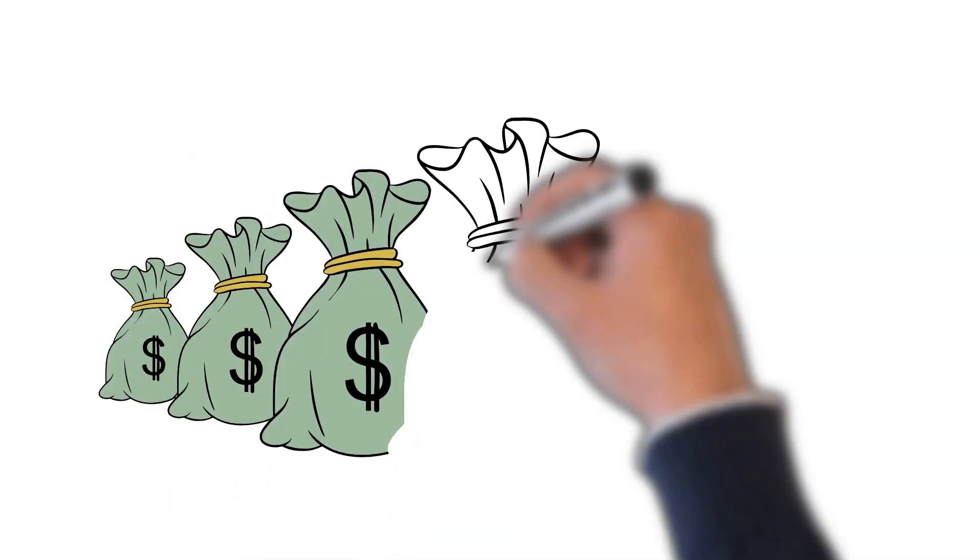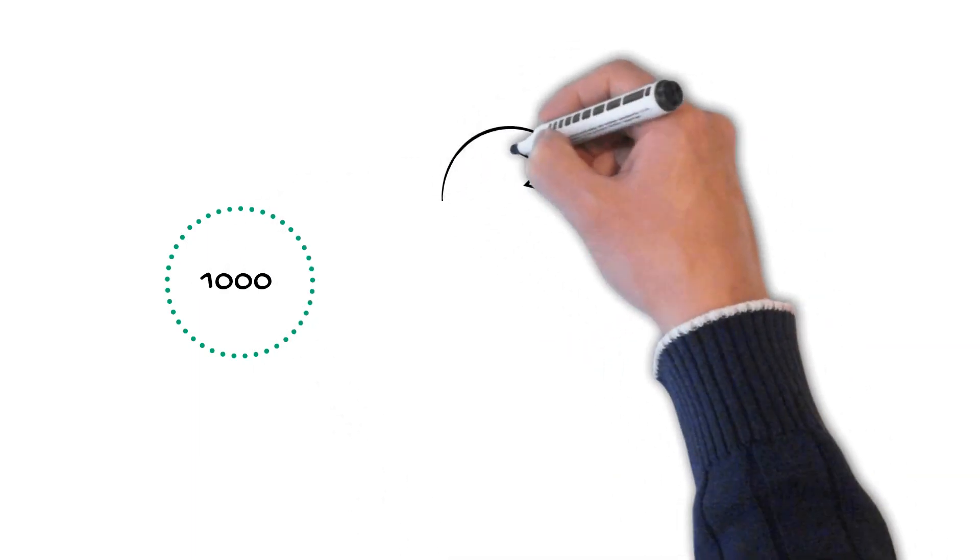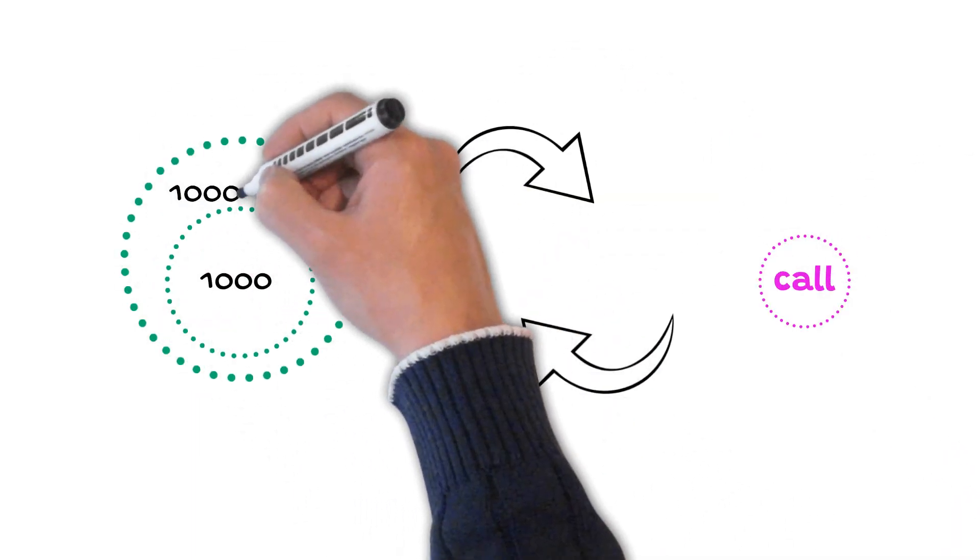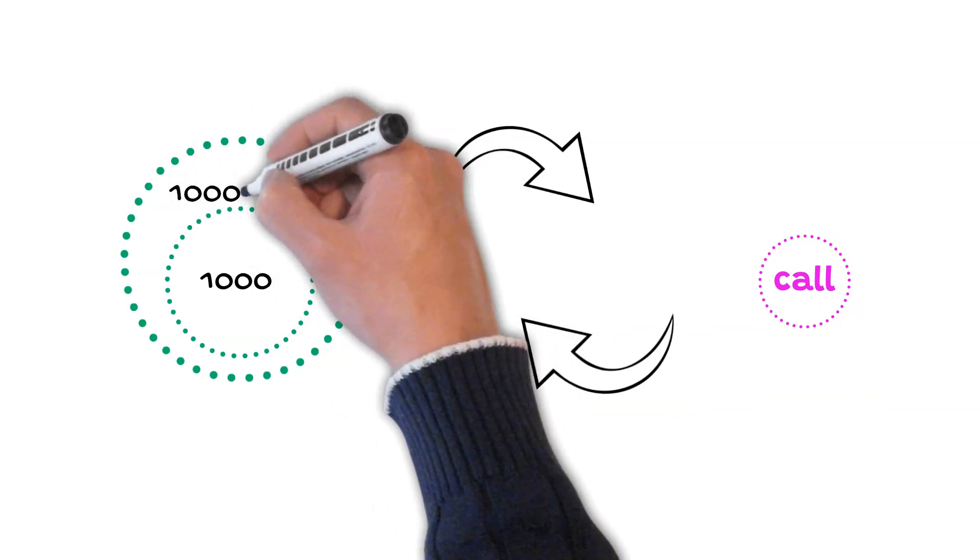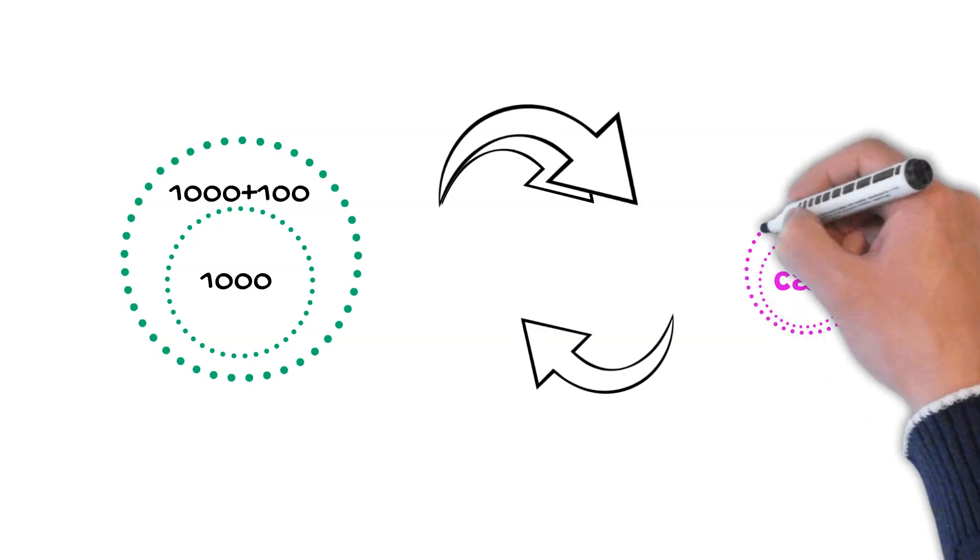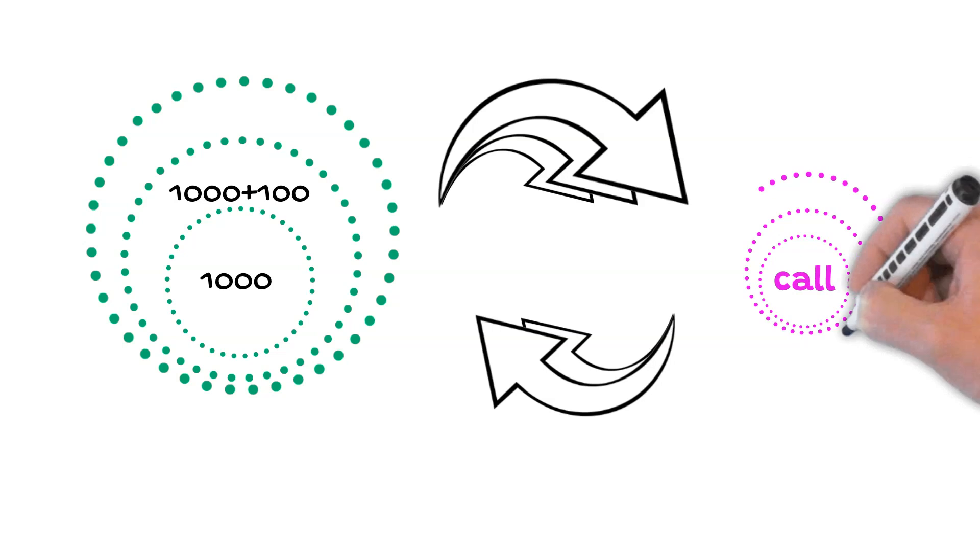We'll explain next how your account value will expand over time. Let's imagine that we've got 1,000 shares. We can get call income from them, with which we can buy, let's say, 100 shares more. Now we have 1,100 shares to generate call income from. With that income, we can buy more shares. The more shares we have, the more call income we can get, and the more shares we can buy.